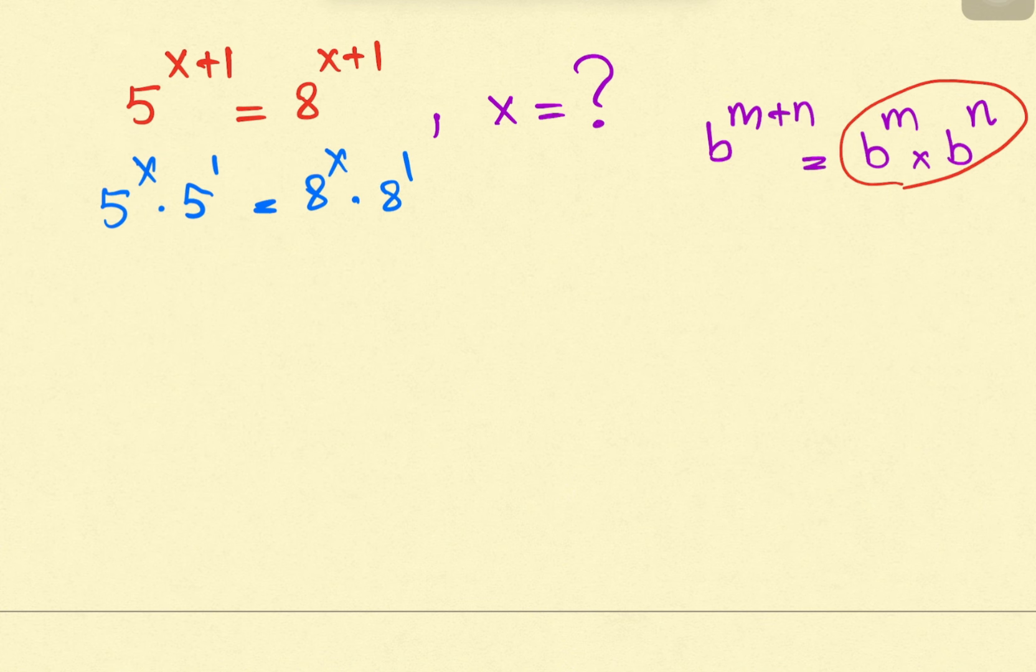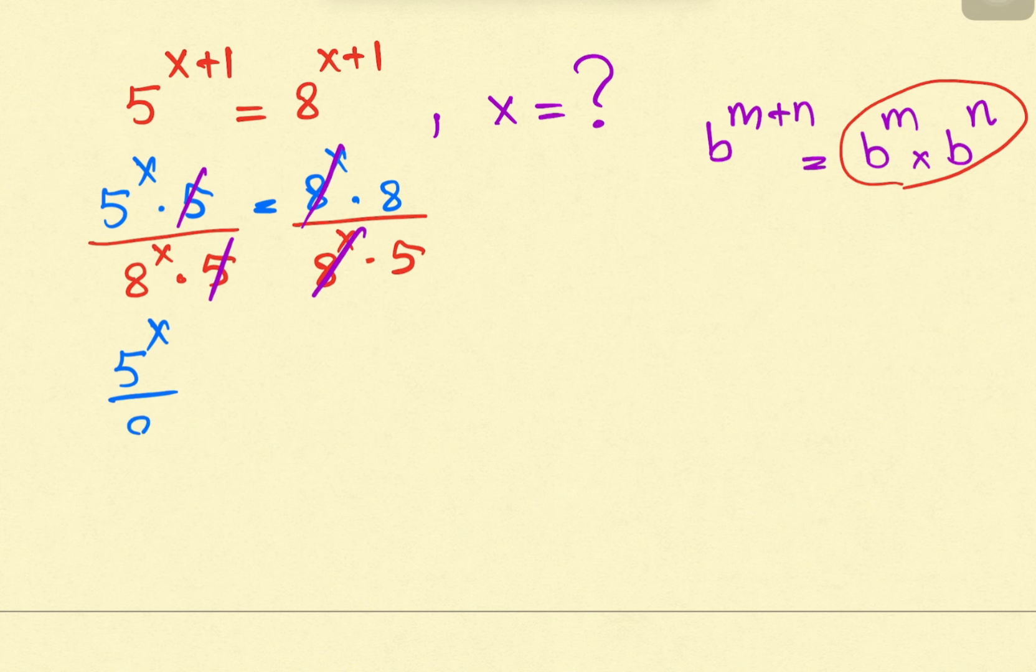We can divide both sides by 8 raised to x multiplied by 5. 5 raised to 1 is 5. 8 raised to 1 is 8.